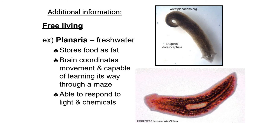In this slide, we have some additional information. This animal — Planaria — is free living and is generally present in fresh waters. It stores food as fat. The brain coordinates movement and it is capable of learning its way through a maze. It is able to respond to light and chemicals. You can see the diagram of planarian organization, which we call Dugesia — clearly given in this slide.